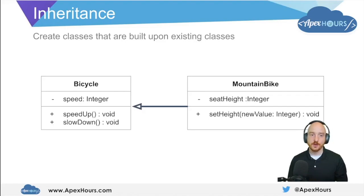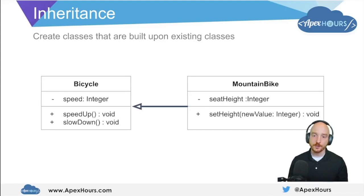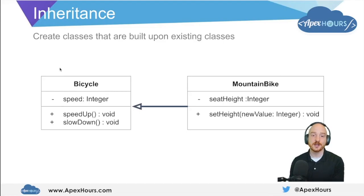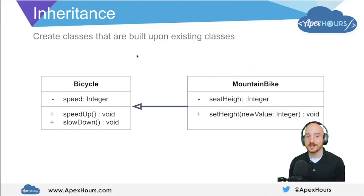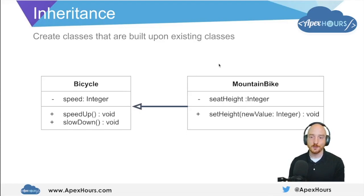One of the most foundational concepts within object oriented programming is inheritance. When we use inheritance, we create classes that are built upon existing classes, reducing the number of lines of code we need to write to define how our program should behave. For example, we have an existing bicycle class already defining that the bicycle can speed up and slow down. We then create a child class called mountain bike. The mountain bike class extends bicycle, and when it does that, it inherits all of the methods and properties of the parent bicycle class. So we don't need to redefine speed up and slow down — we get those for free by inheriting from the parent bicycle class.